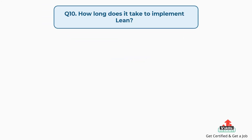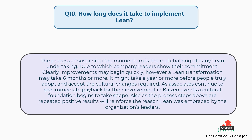Question number ten: how long does it take to implement lean? The answer is, the process of sustaining the momentum is the real challenge to any lean undertaking, due to which company leaders show their commitment. Clearly, improvements may begin quickly; however, a lean transformation may take six months or more. It might take a year or more before people truly adopt and accept the cultural changes required. As associates continue to see immediate payback for their involvement in Kaizen events, a cultural foundation begins to take shape. As the process steps above are repeated, positive results will reinforce the reason lean was embraced by the organization's leaders.